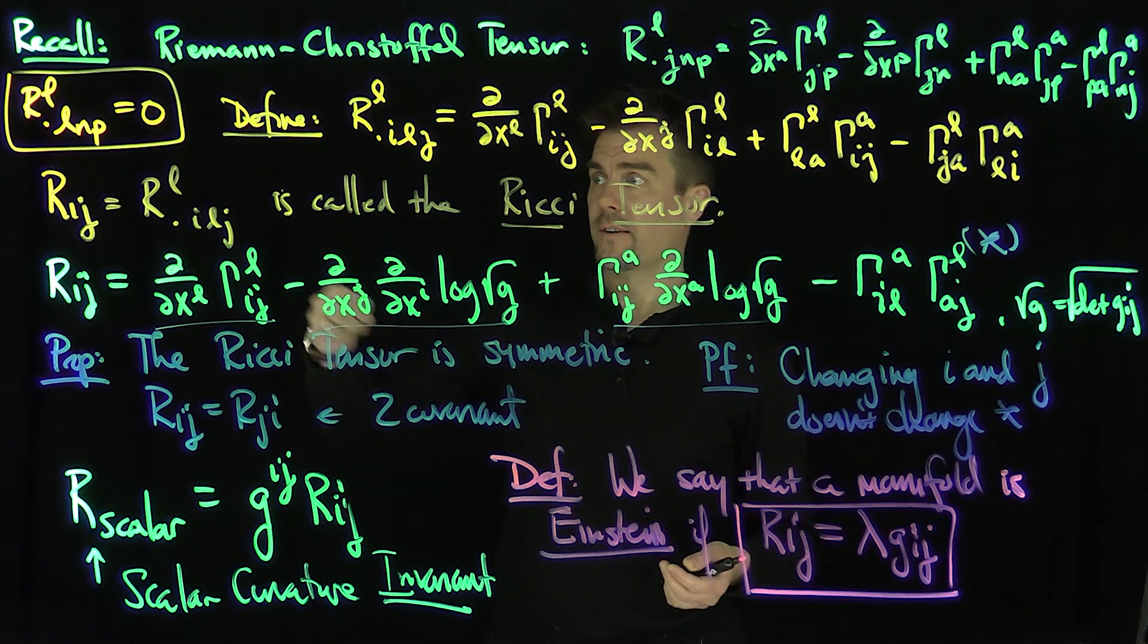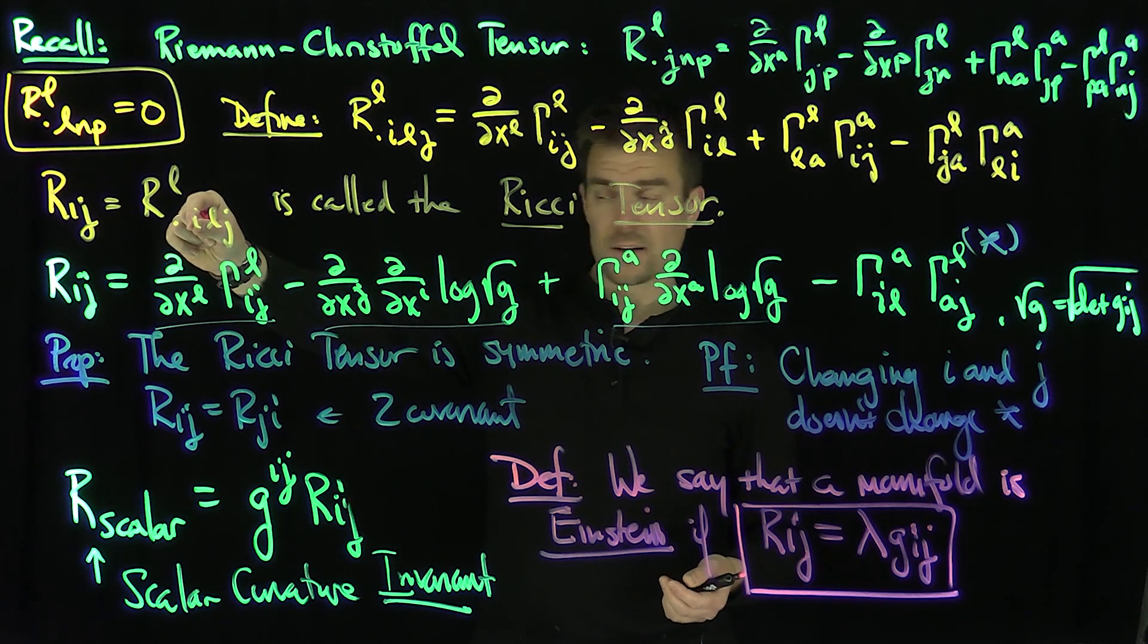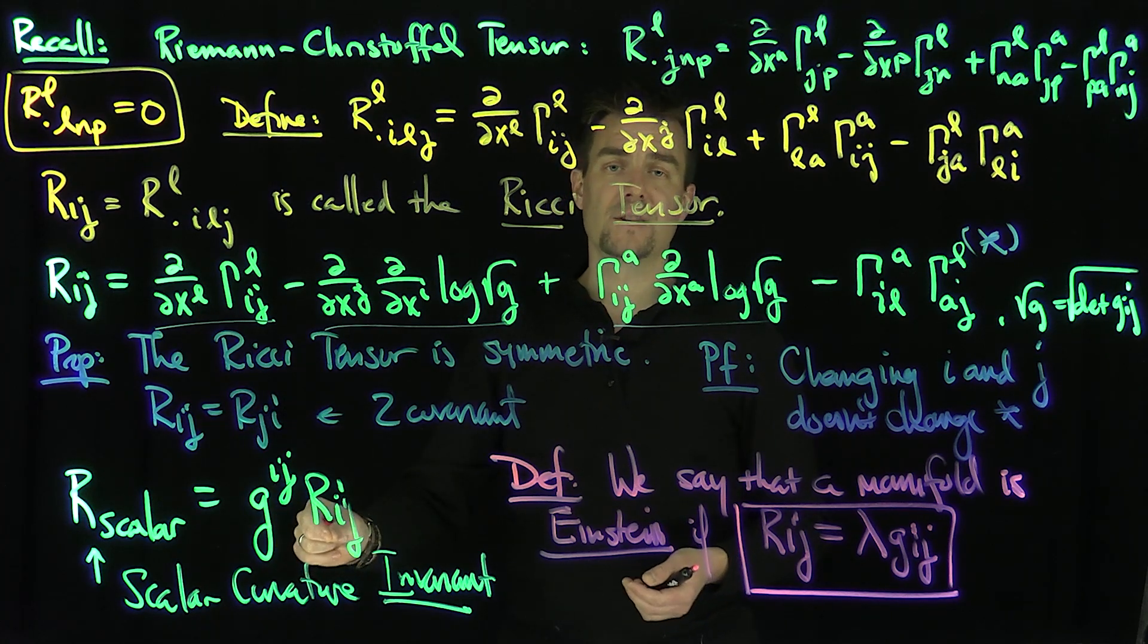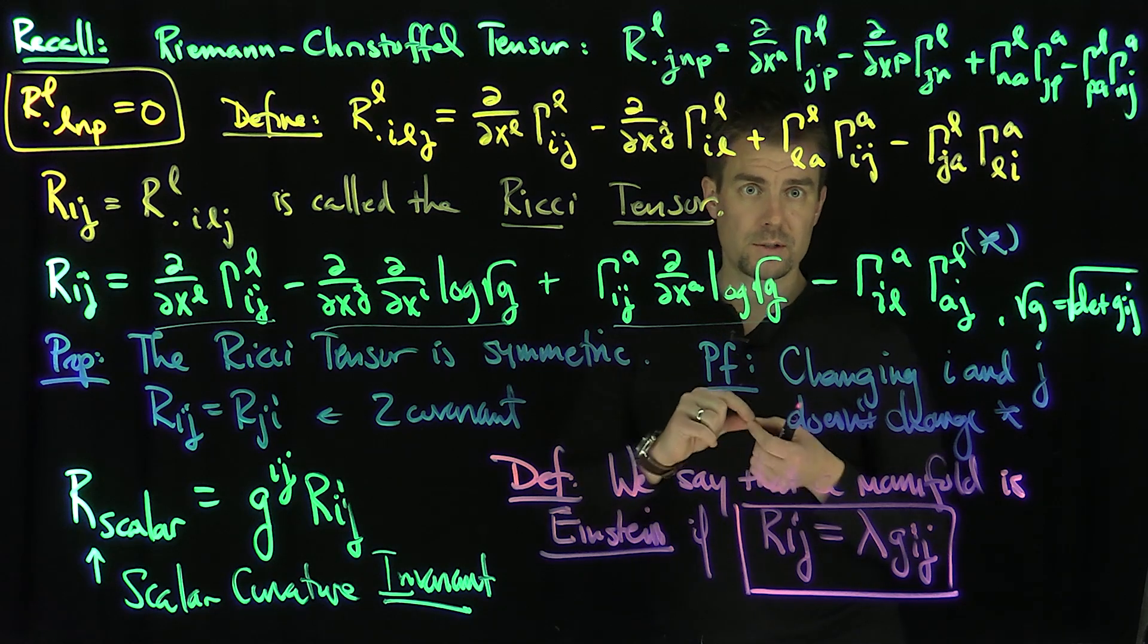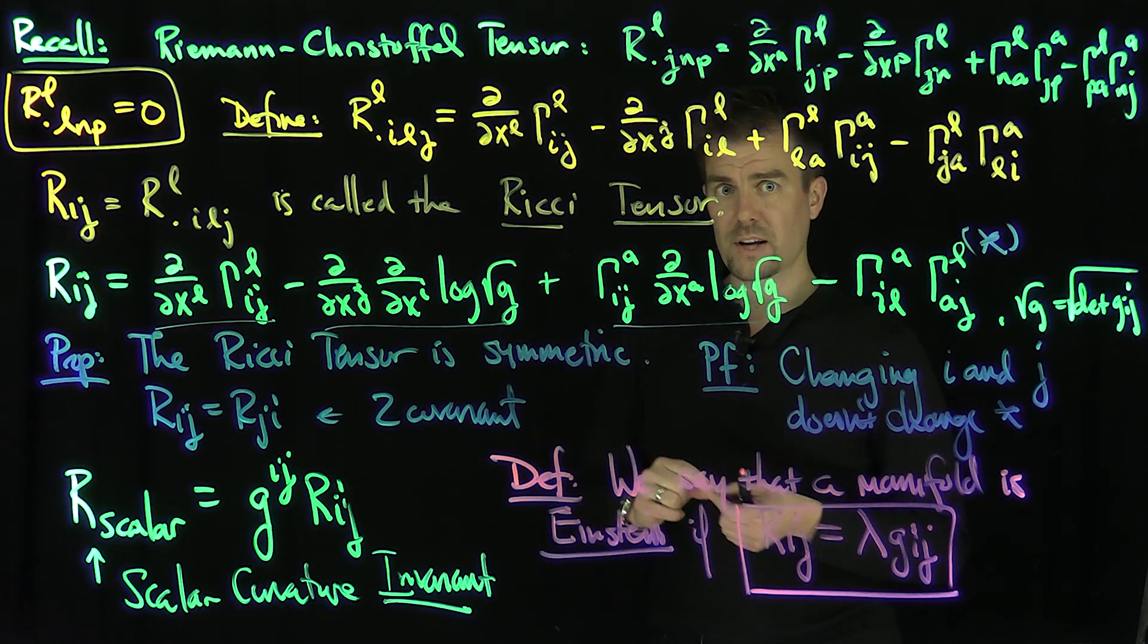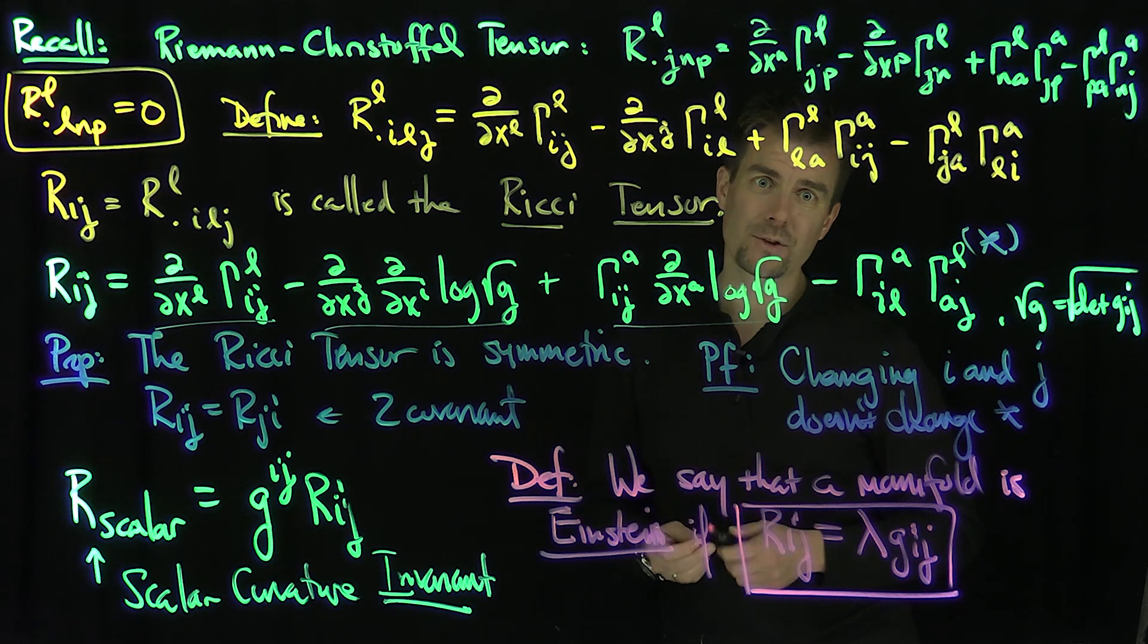If we start with this Riemann-Christoffel tensor and do subsequent traces, if I do one trace, I can get rid of two indices. If I do another trace, I can get rid of another two indices, and that is a scalar invariant quantity. Spaces of constant curvature play an important role in understanding the structure of manifolds. Thank you very much.